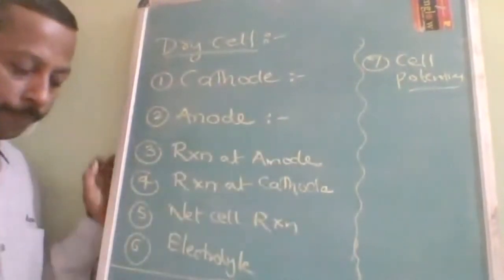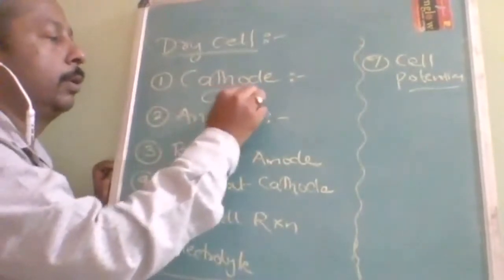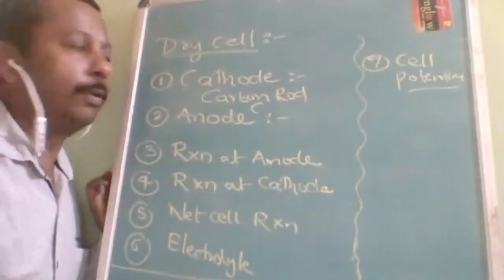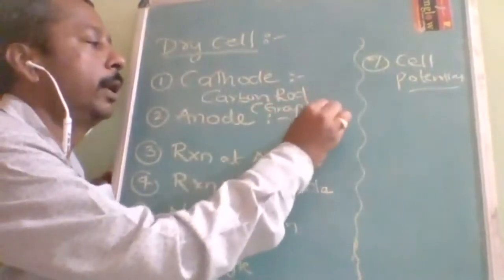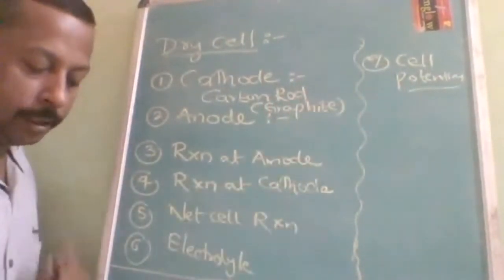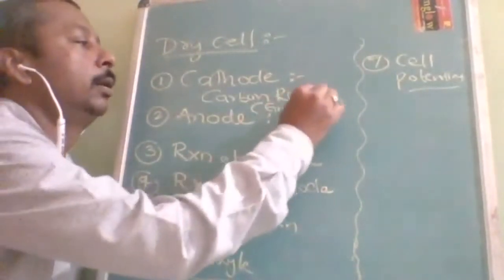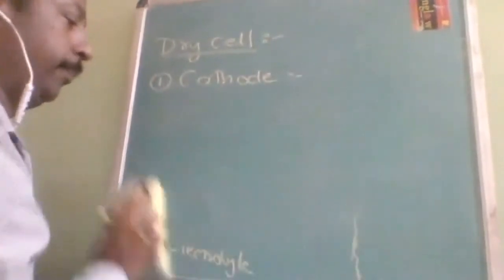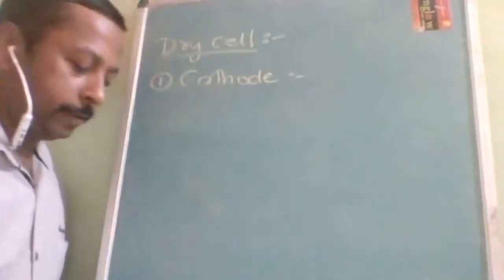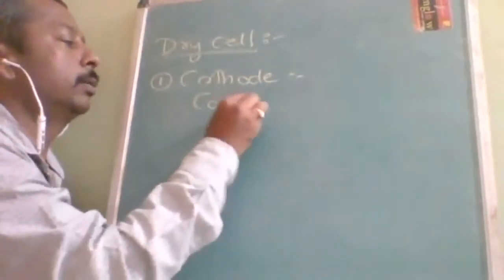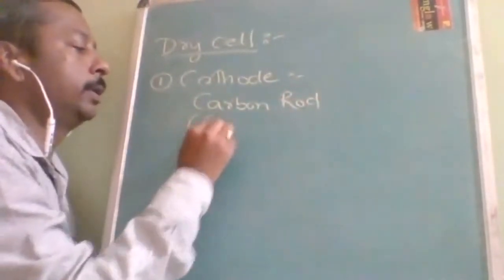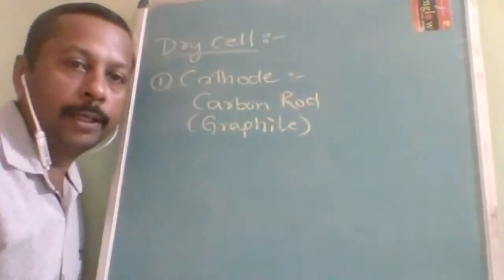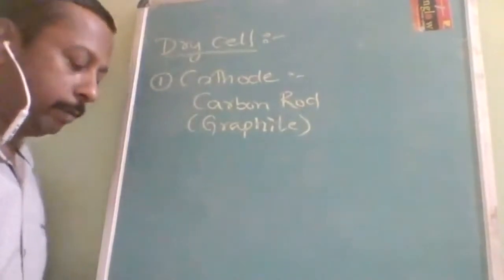In the dry cell, the cathode is a carbon rod — specifically graphite. Graphite is the only non-metal which is a conductor. The carbon rod is surrounded by a paste of MnO2 and some powdered graphite.